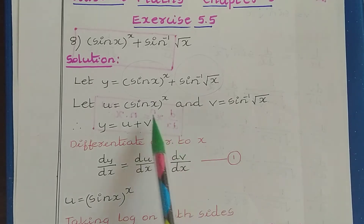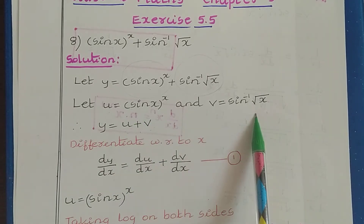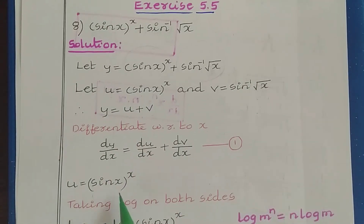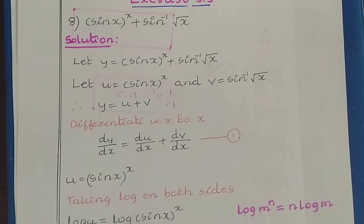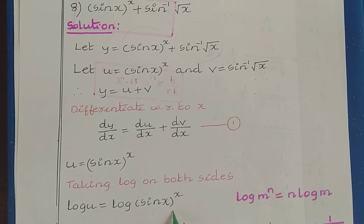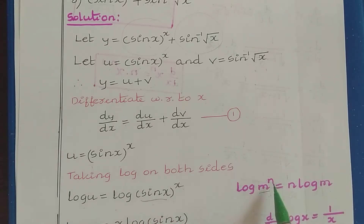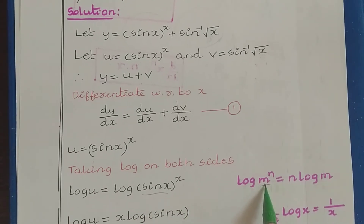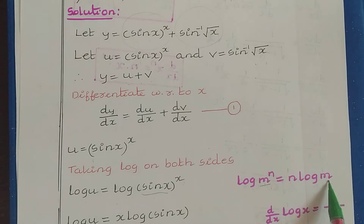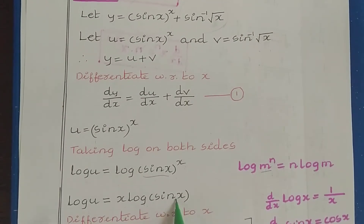Next we differentiate each function. First, for u = (sin x)^x, we take log on both sides: log u = log(sin x)^x. Applying the logarithmic property log(m^n) = n·log(m), where m = sin x and n = x, we get log u = x·log(sin x). Now differentiate this with respect to x.